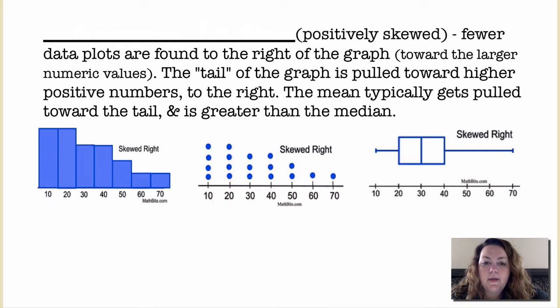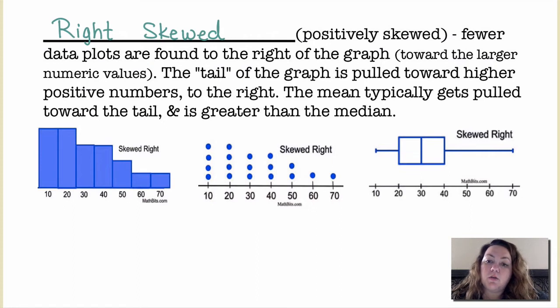A right skewed or positively skewed distribution has fewer data points found to the right of the graph toward the larger numeric values. The tail of the graph is pulled towards the higher positive numbers, to the right.